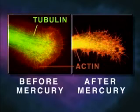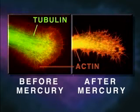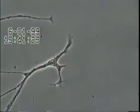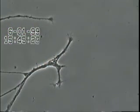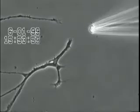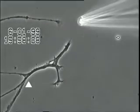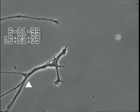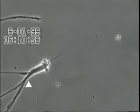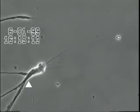Shown here is a neurite growth cone stained specifically for tubulin and actin, before and after mercury exposure. Note that the mercury has caused disintegration of tubulin microtubule structure. These new findings reveal important visual evidence as to how mercury causes neurodegeneration. More importantly, this study provides the first direct evidence that low-level mercury exposure is indeed a precipitating factor that can initiate this neurodegenerative process within the brain.